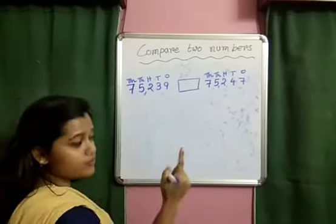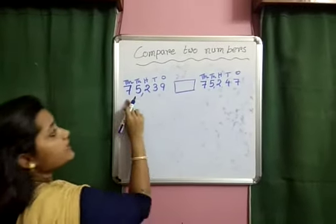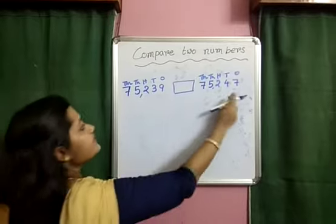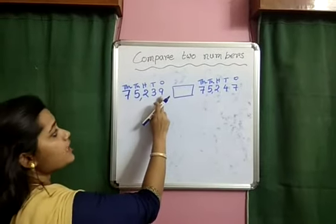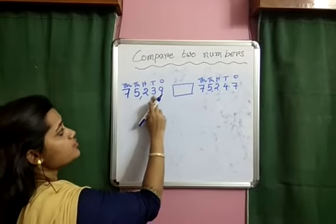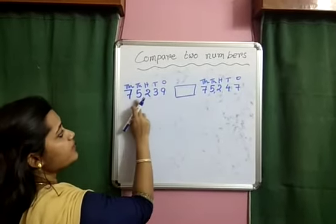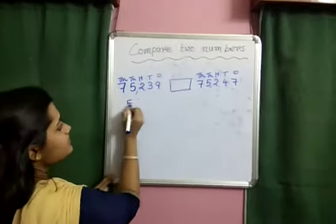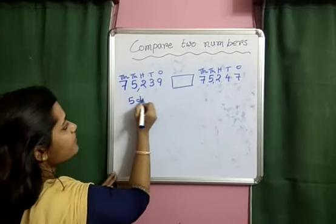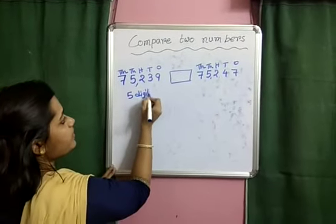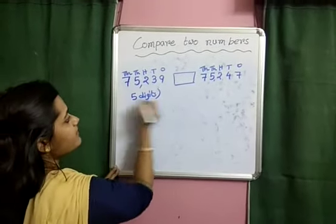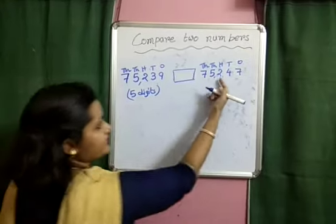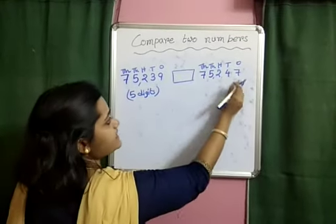The first step is to count the total number of digits. Let's count: 1, 2, 3, 4, 5. So this one is a 5-digit number — 5 digits are here.